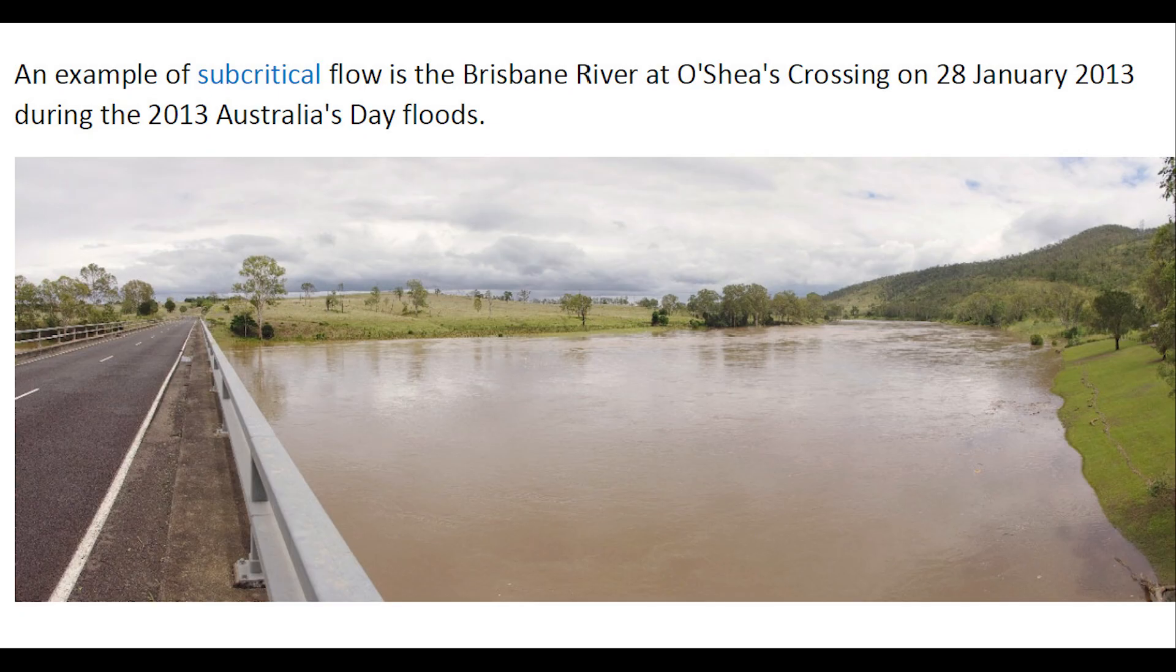An example of subcritical flow is the Brisbane River at Ocean Crossing on the 28th of January 2013, during Australia's day floods, looking upstream.